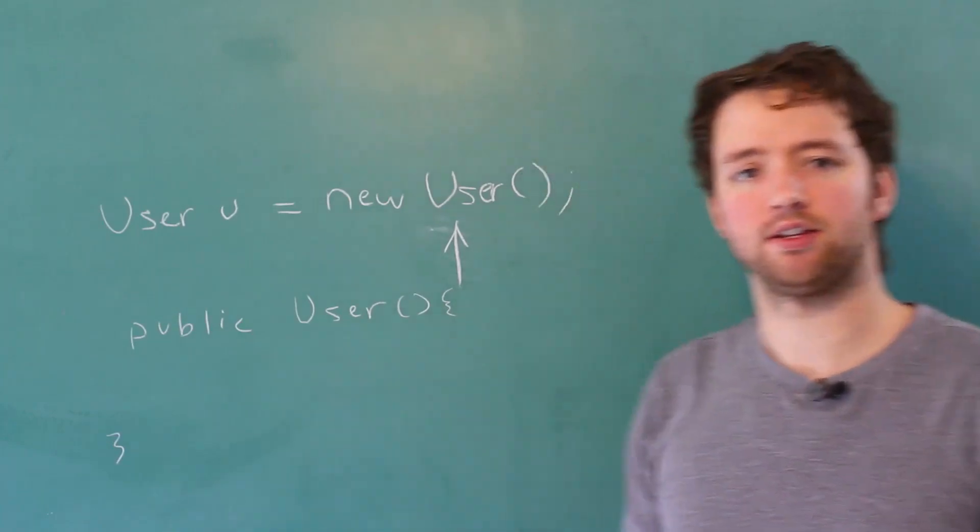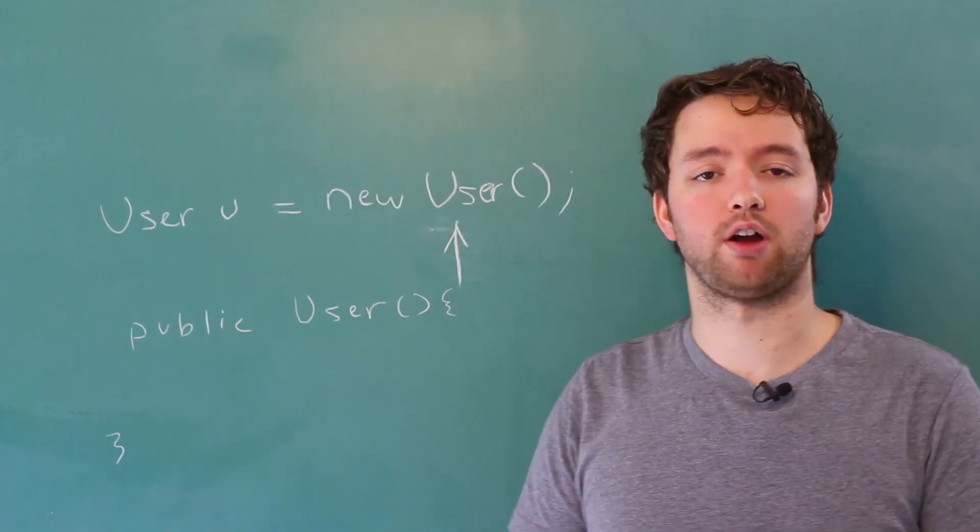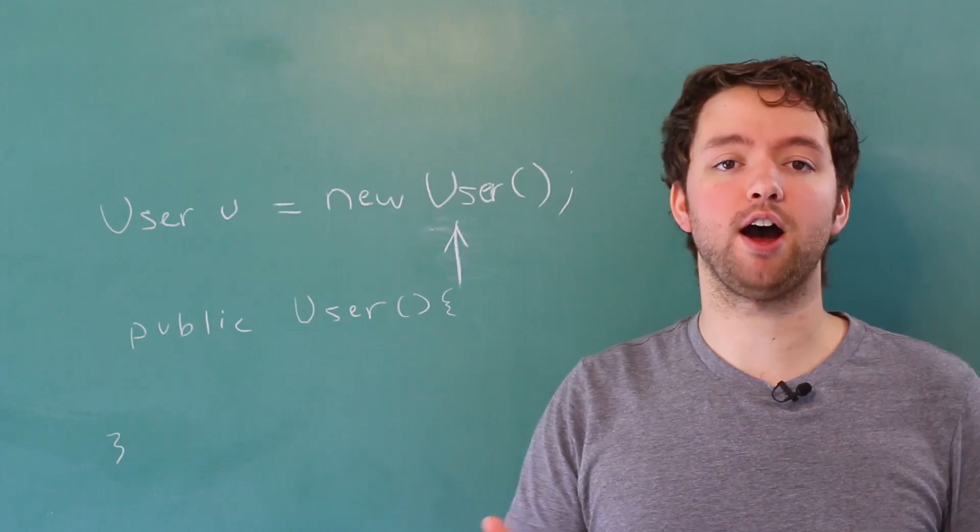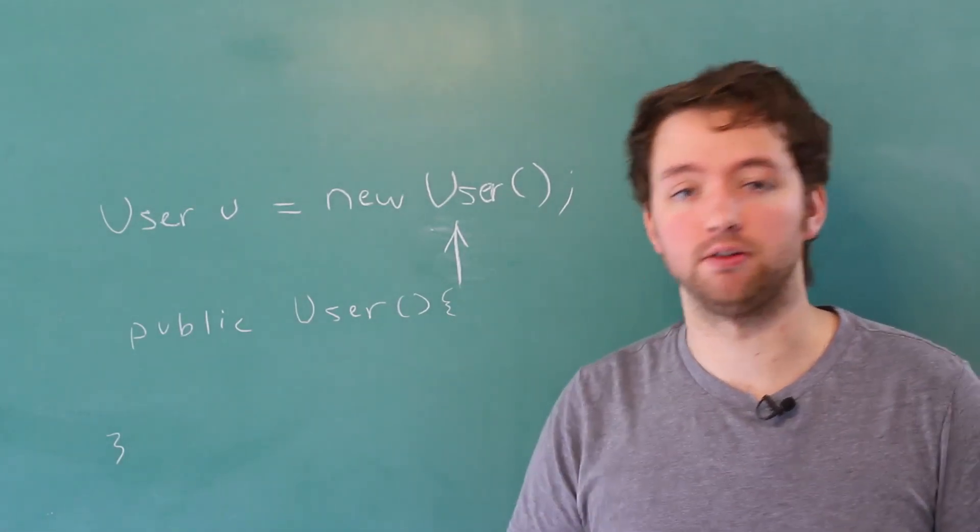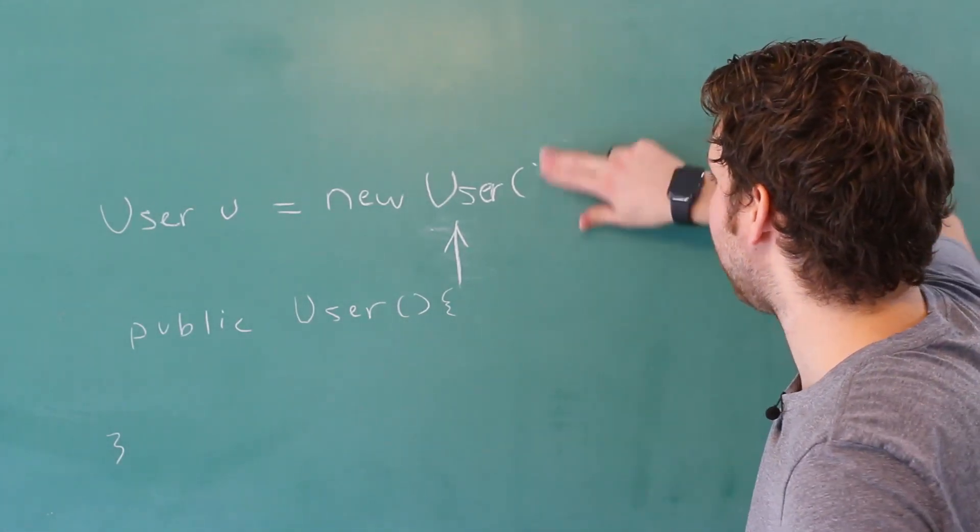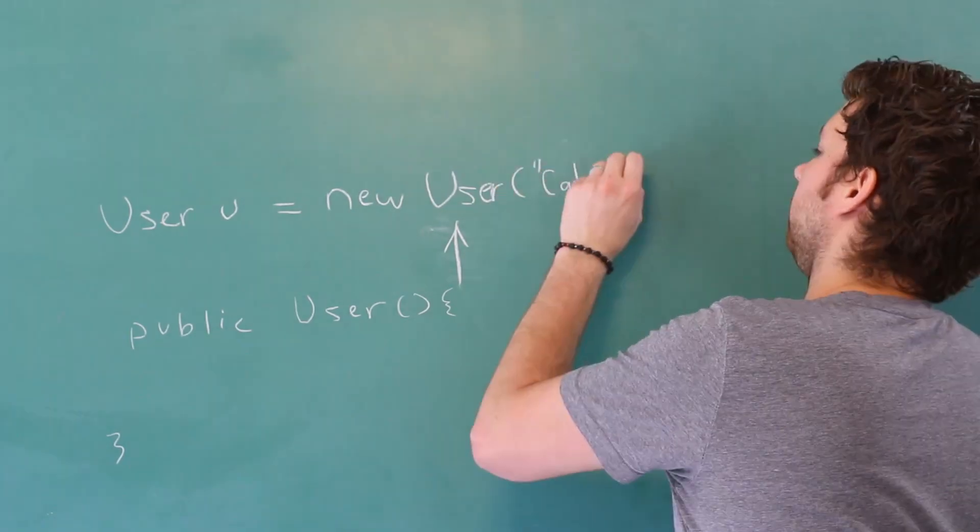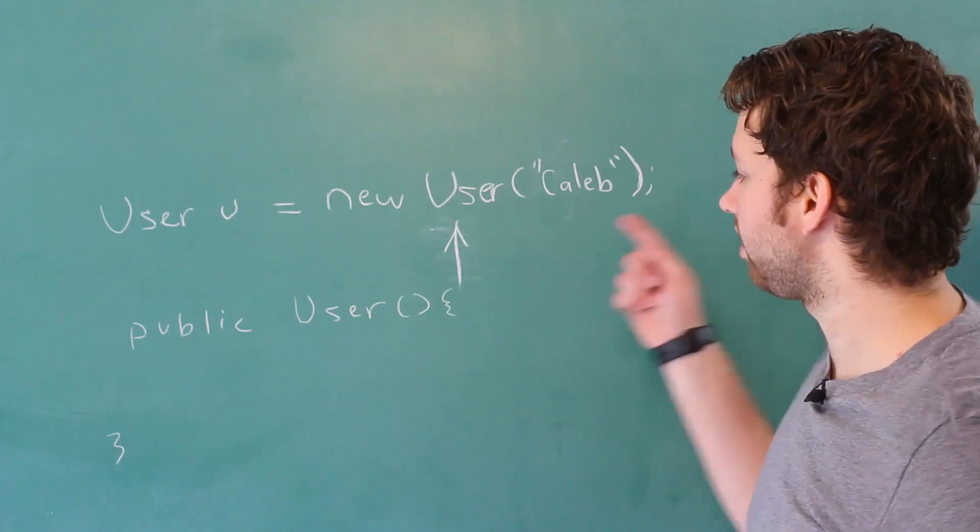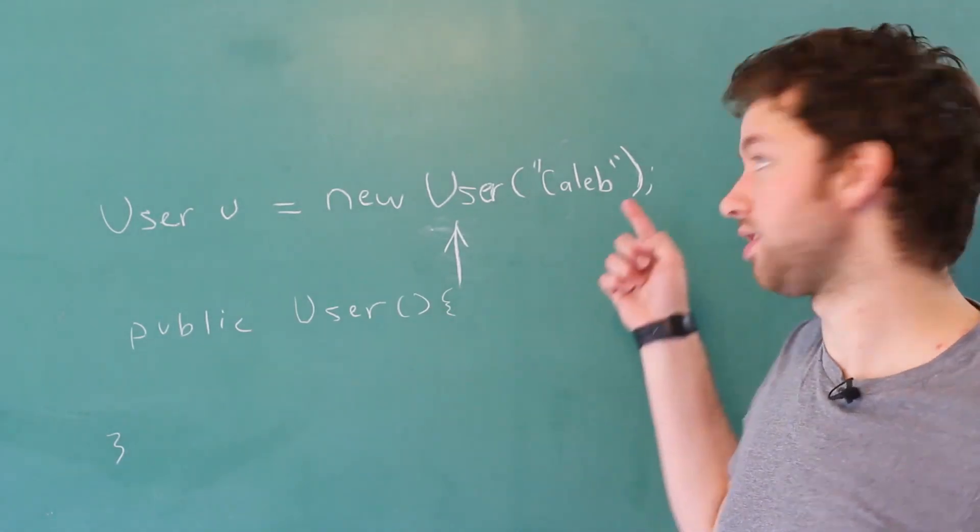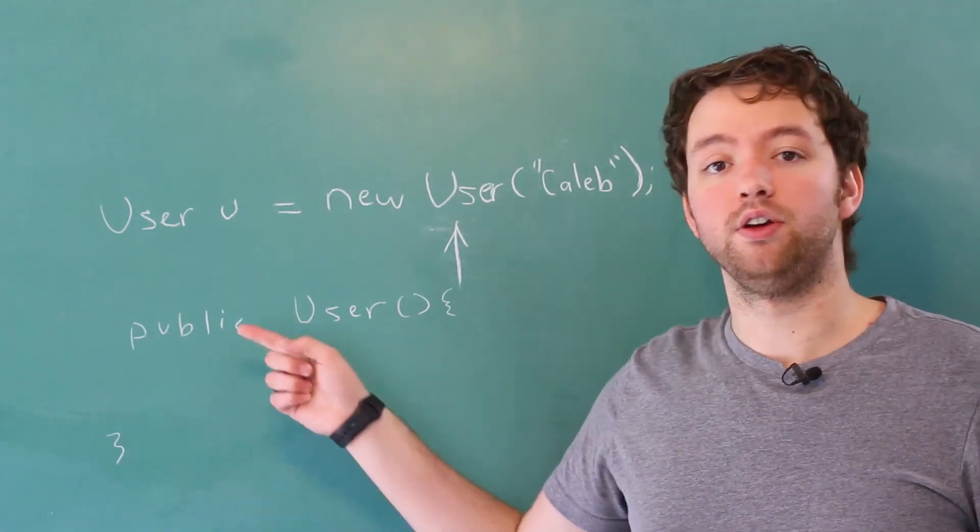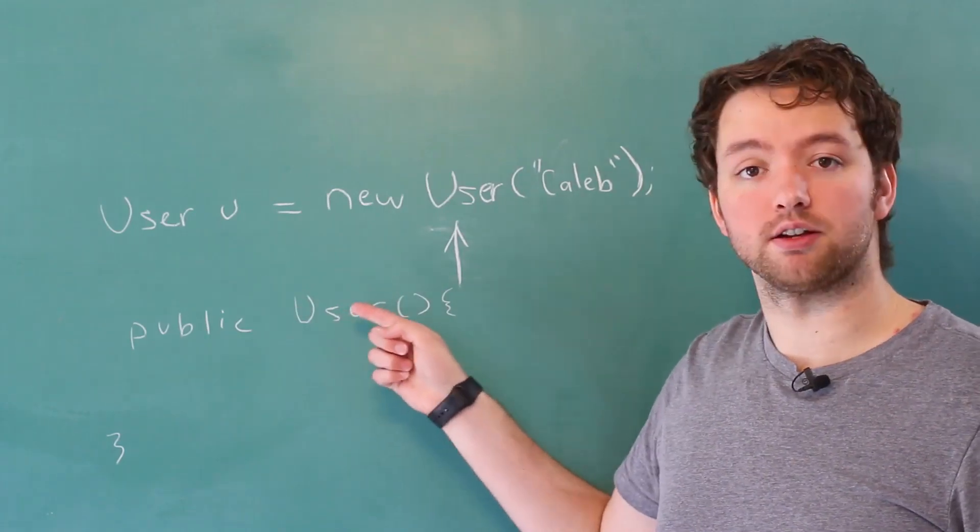Now why would you need this? Well, the primary reason of a constructor is so we can initialize the object with certain values. For example, we could pass in a first and last name here. Or let's just go with the first name, because I don't feel like writing a bunch. Then inside of the constructor, we can assign that value to the fields in this class.